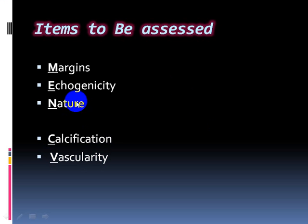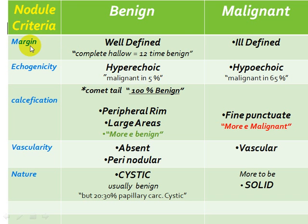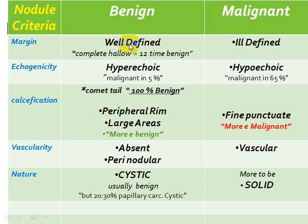The first item is the margin. In a benign lesion, the margin will be well-defined. If the margin is well-defined and surrounded by a complete halo around the lesion, this means the lesion is more likely to be benign. In a malignant lesion, the margin will be ill-defined.